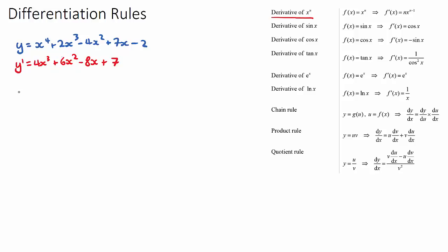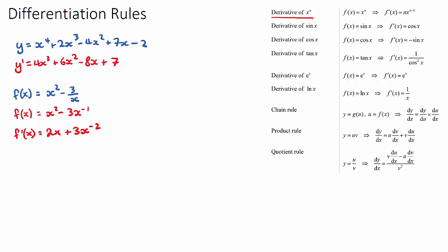For our second example, f(x) equals x squared minus 3 on x. This looks trickier but it still uses the power rule. Rewrite the function as x squared minus 3x to the negative 1 using index laws. Deriving gives 2x, and the negative 1 comes down to multiply by negative 3, giving positive 3x to the negative 2, which simplifies to 2x plus 3 over x squared.